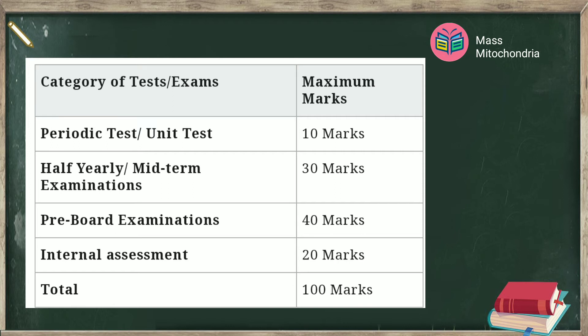So totally 100 marks. In case a school has conducted more than one test or exam within each category, the result committee may fix the weightage to be given to each test or exam within the category, subject to the overall maximum marks for the category. For example, if a school has conducted two or three pre-board exams, it may decide to take an average of the three exams, take the best performance, or give a weightage to each exam as considered suitable. Here is the schedule.